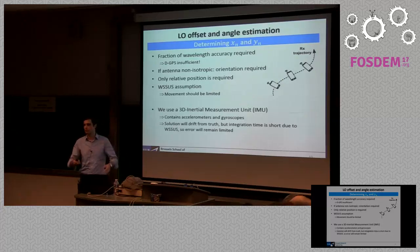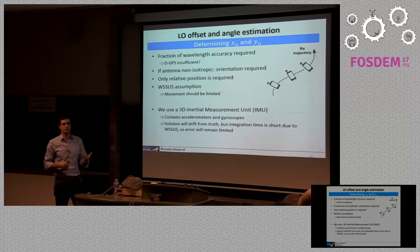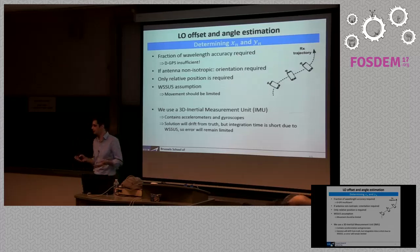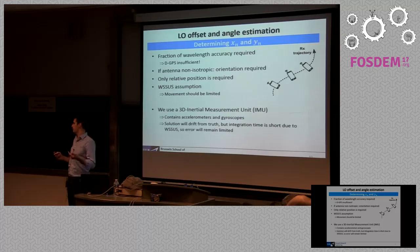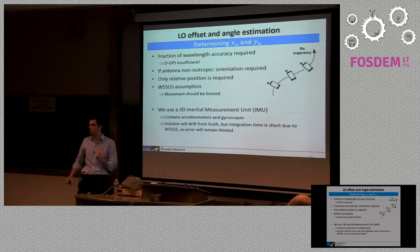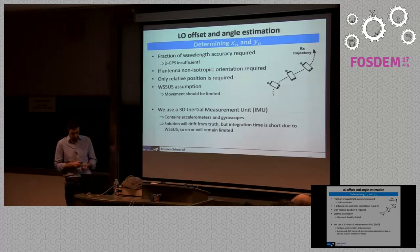A common question is: why not use GPS? The reason is that we need accuracy on the order of a fraction of a wavelength — GPS won't give you that. The second reason is that if your antenna radiation pattern is not isotropic, you also need to know the orientation of your receiver. Unless you're working with a linear antenna only in the XY plane, if you have a patch antenna in your phone, you need to know the orientation to account for it in the angle of arrival estimation algorithm.